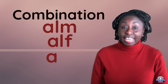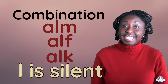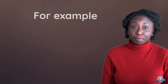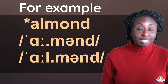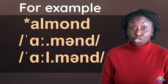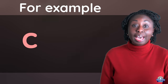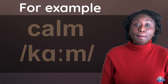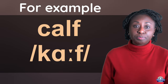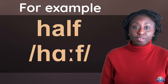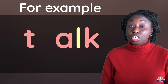For example: almond. With some accents they actually pronounce the L — almond — so please keep this in mind. Bam, cam, pam. Calf, half. Chalk, talk.